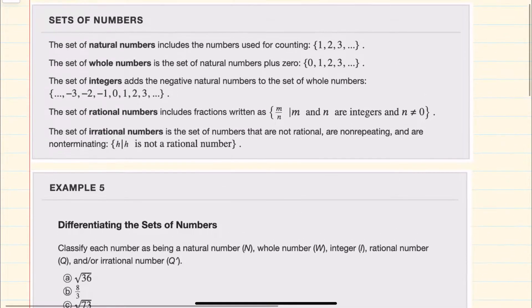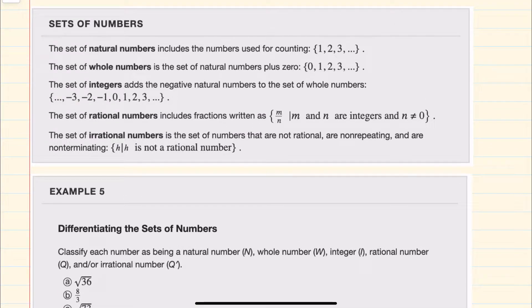First I'll recall that natural numbers include all of our counting numbers: one, two, three, four, five, etc. Whole numbers take all of those numbers and add zero. And again, integers take all of those numbers and add their opposites.